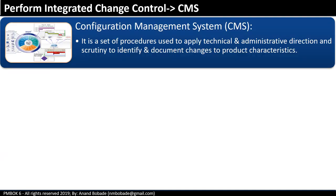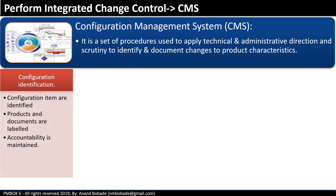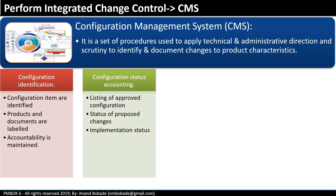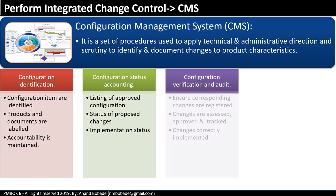Configuration management is a three-step process — you can always expect one question on this. The first step is configuration identification, where configuration items are identified, products and documents are labeled, and accountability is maintained. The next step is configuration status accounting, which refers to listing approved configurations, status of proposed changes, and implementation status. Finally, configuration verification and audit ensures corresponding changes are registered, assessed, approved, tracked, and correctly implemented.